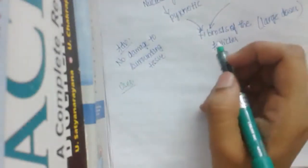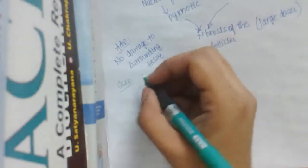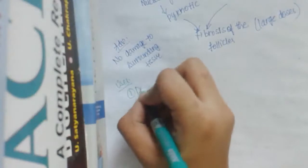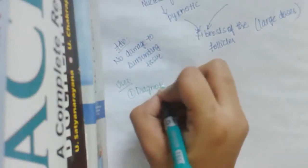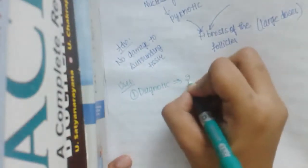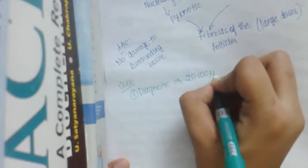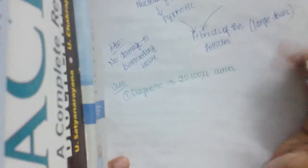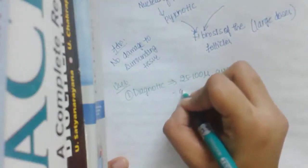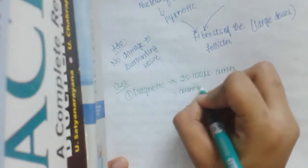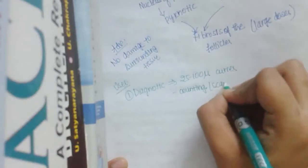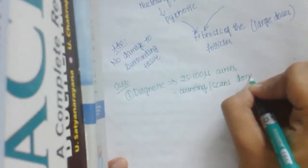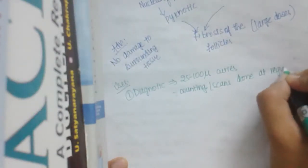Coming to uses of radioactive iodine. One is diagnostic. If it is diagnostic, we use 25 to 100 microcuries, and then counting using scans done at regular intervals.